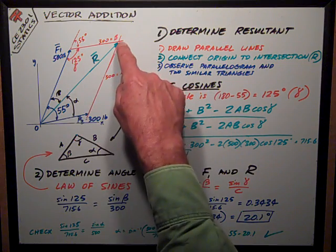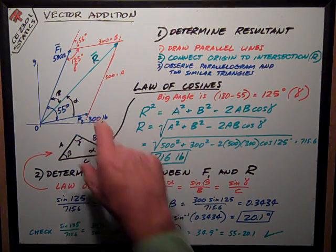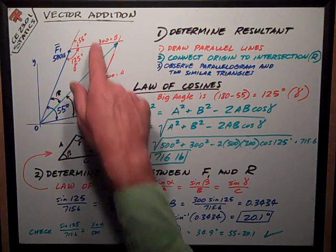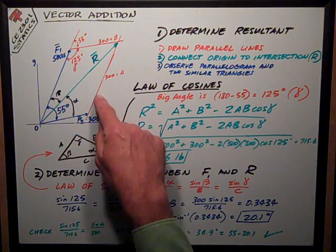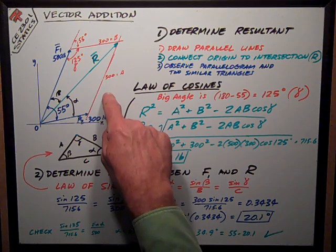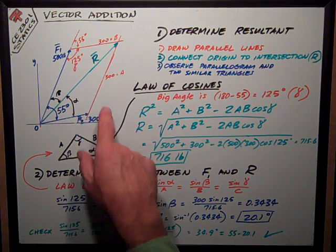They're going to intersect at some point up here. The length of this line is also going to be 300, and the length of this line is also going to be 500. It really helps to draw your sketches as close as you can to scale so you get a good feel for what the correct answer is.